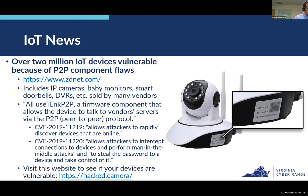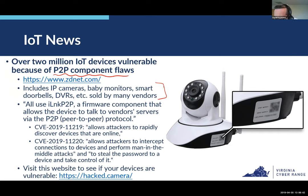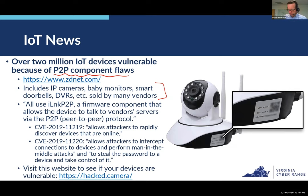A couple bits of IoT news for this week — I'll be very brief. Over 2 million devices are vulnerable because of some peer-to-peer component flaws, according to a ZDNet article. IoT devices are notorious for having poor security. One primary factor is that organizations are competing to get products out the door as quickly as possible to gain market share — for example, being first to market with an IP camera.